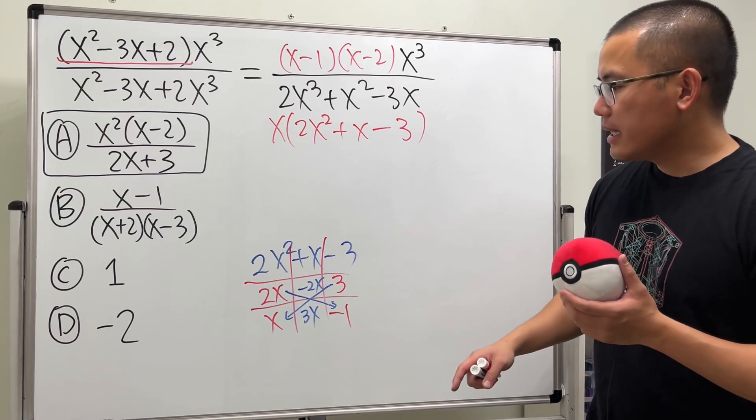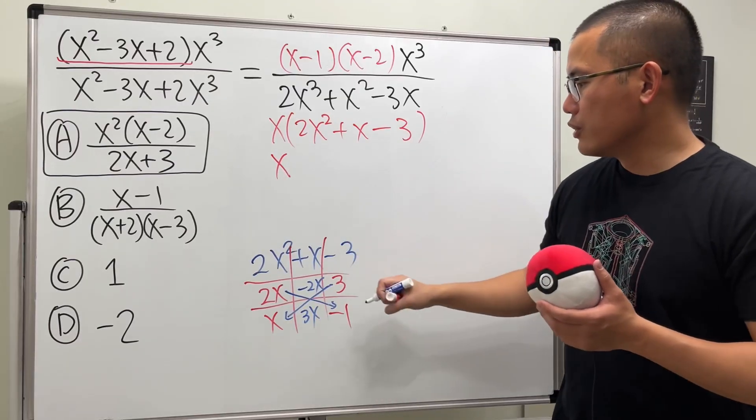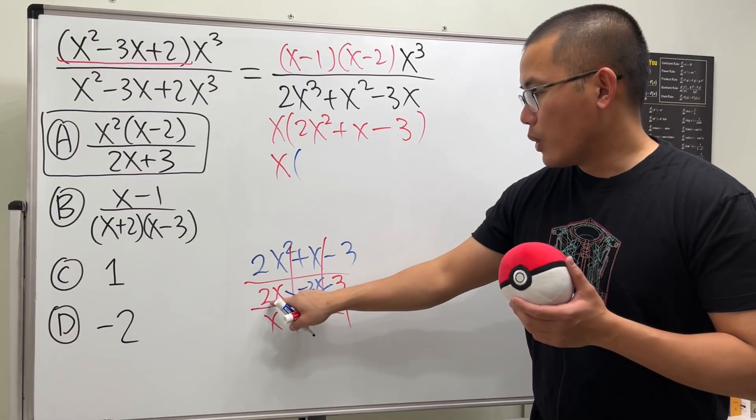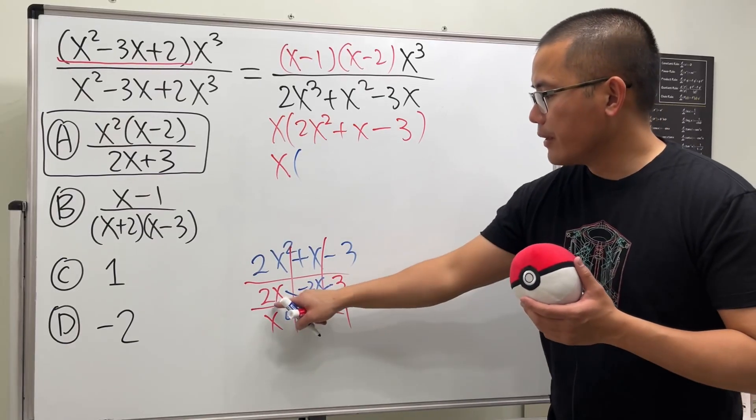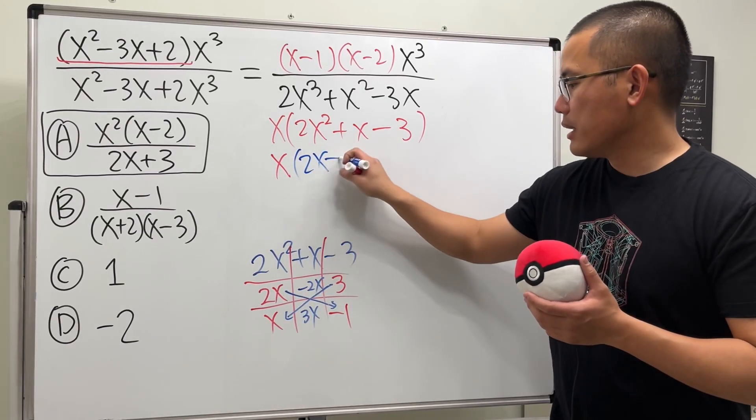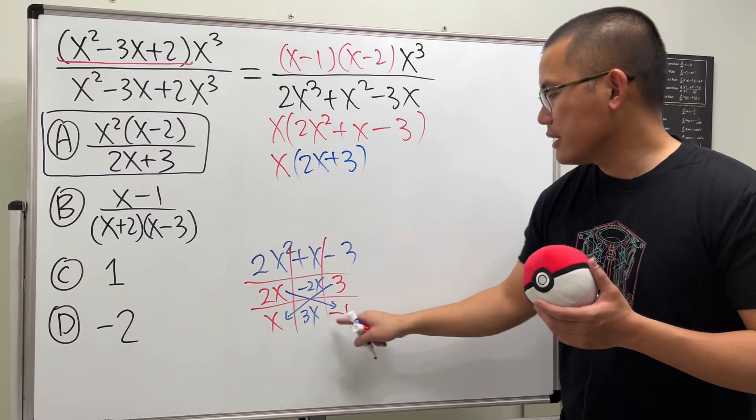With that being said, we have x and then when we do the tic-tac-toe, remember we read across for the answer, so we have (2x+3)(x-1).